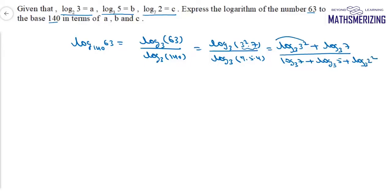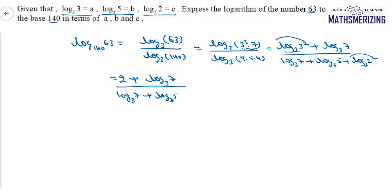Now I can take the powers out and log 3 base 3 is 1. So the numerator becomes 2 plus log 7 base 3, and the denominator is log 7 base 3 plus log 5 base 3 plus 2 log 2 base 3.